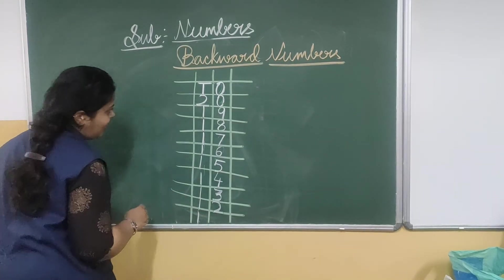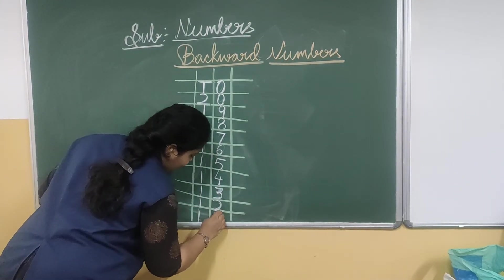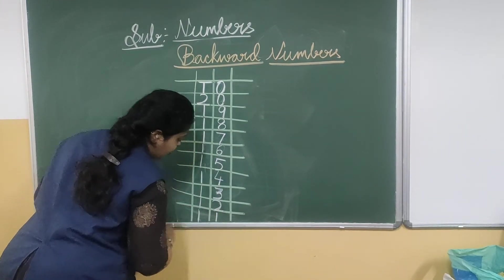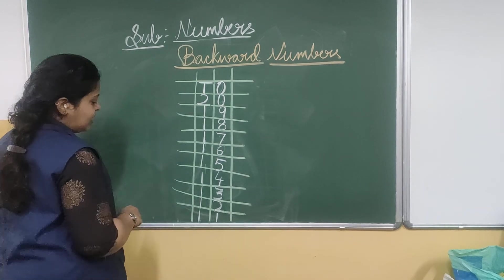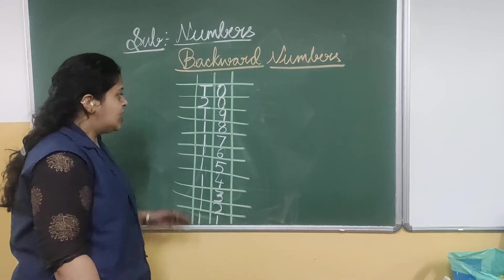Write 1 under the 10's place. And 2 before is number 1. That is 1, 1 — 11. So 12 before is 11.